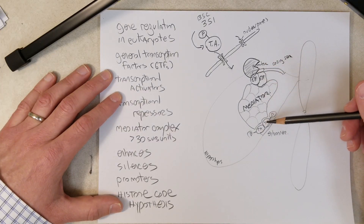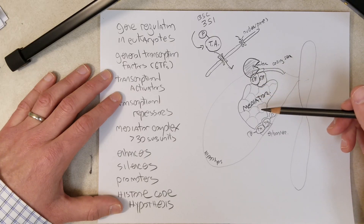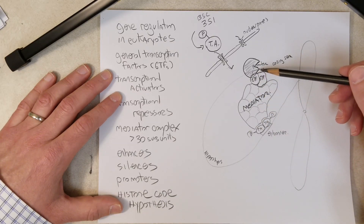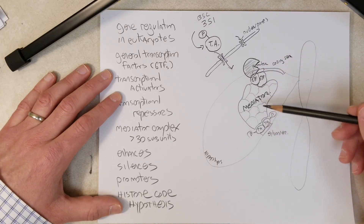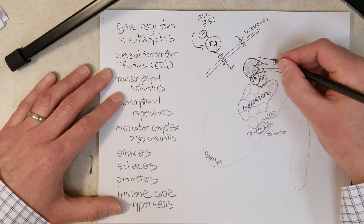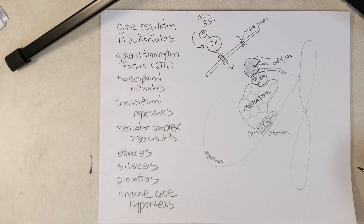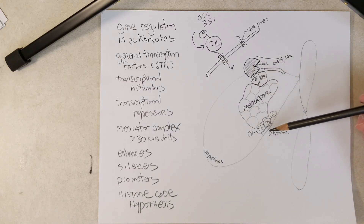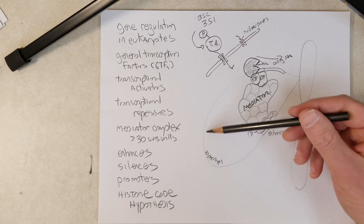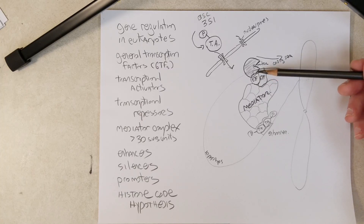Without the transcriptional activators interacting with mediator, this whole loop structure will not be very stable, and RNA polymerase will not be loaded onto the promoter as efficiently. When RNA polymerase is loaded onto the promoter, it can transcribe the coding sequence. So that's an example of how transcriptional activators may bind to an enhancer far from the gene, forming a DNA loop spanning tens of thousands of base pairs, and by interacting with mediator and the general transcription factors, get RNA polymerase loaded onto that promoter efficiently.